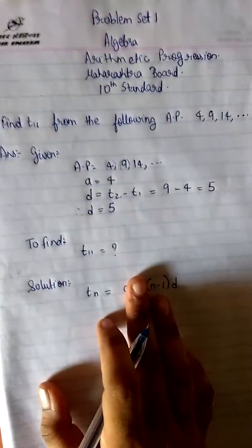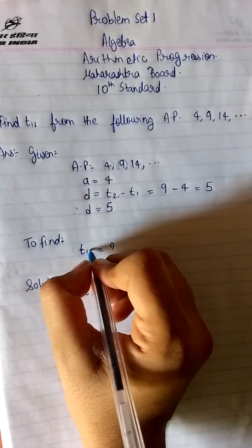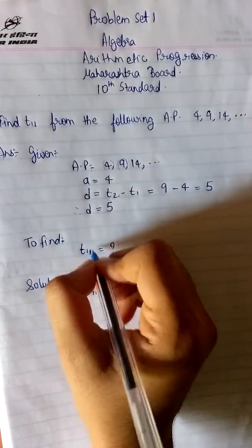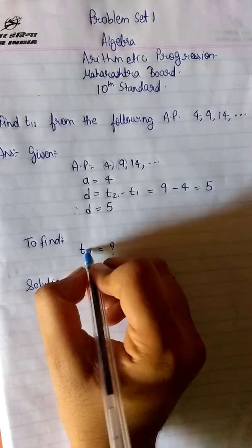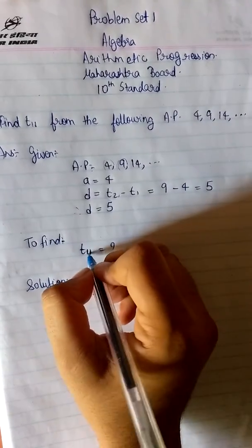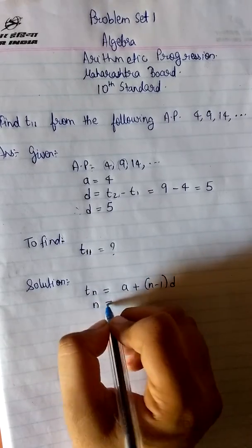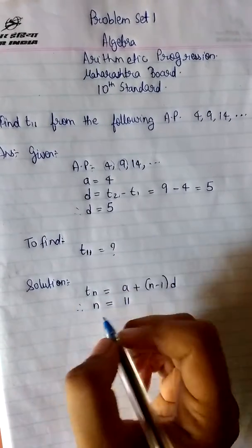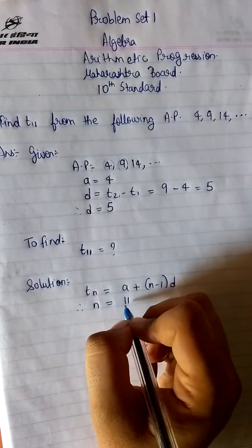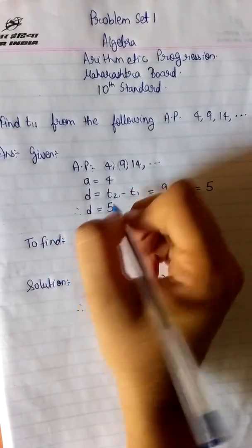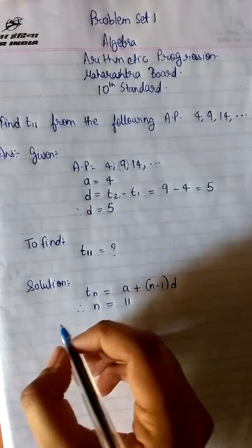Where N can be any number. So here we are supposed to find the value of Tn when N is equals to 11. So here can you see that N is substituted by 11. So here also in the formula we will substitute N is equals to 11. So we got the value of N as 11. We got the value of D as 5 and we got the value of A as 4.